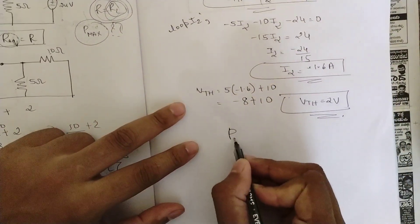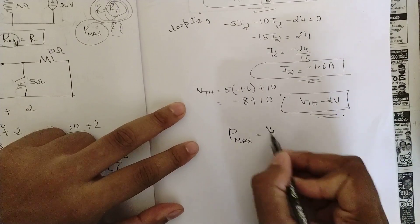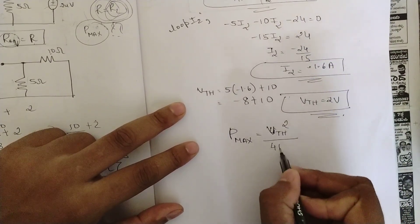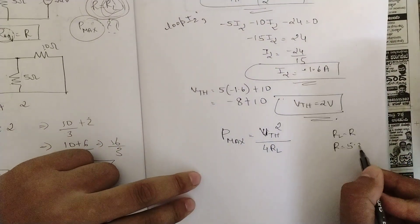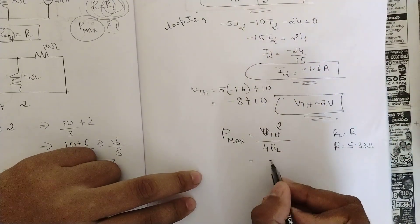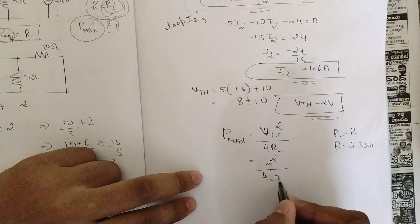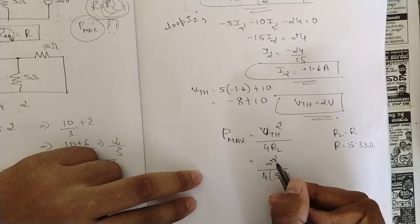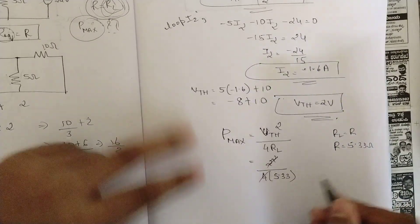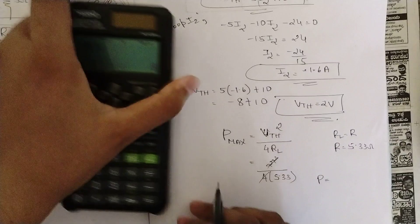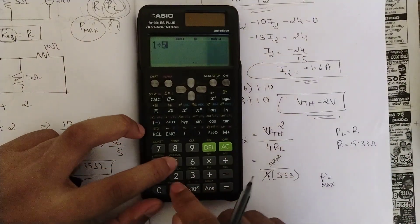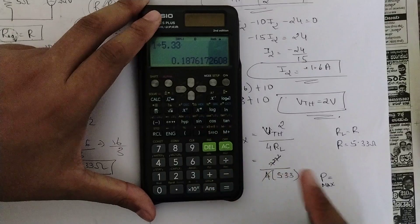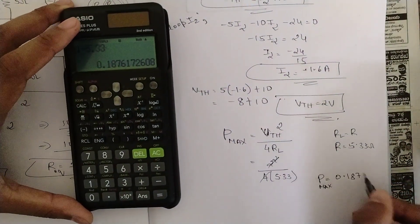Now substituting into the maximum power formula: P_max = Vth² / (4 × R_L) = 2² / (4 × 5.33) = 4 / 21.33 ≈ 0.187 W. The 4 in the numerator and denominator cancel, leaving 1 / 5.33 ≈ 0.187 W. So the maximum power is approximately 0.187 W.